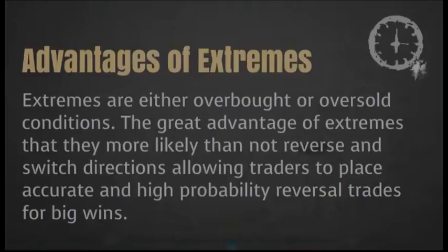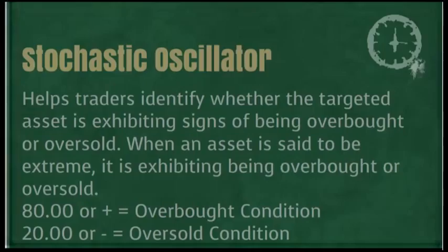The first technical indicator we could use would be the stochastic oscillator indicator, while the other one is our RSI indicator, otherwise known as the relative strength index indicator. Both of these technical trading indicators do a great job showing the current conditions of our target assets.